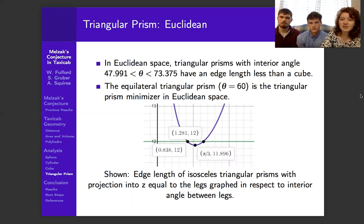So even though we said that the equilateral triangular prism is the smallest in Euclidean space, all triangular prisms are not always smaller than the cube.